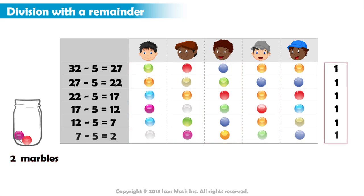Let us count the number of times each player received a marble. We have six. So, to divide 32 among five people, each player gets six marbles,